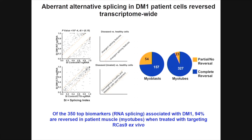We see a dramatic reversal of splicing changes in patient myotubes as well. This is the greatest and most precise number of changes we've ever seen - risk to show restoration of the aberrant effects downstream of expanded repeats. Others have used oligos, siRNAs, small molecules, but this is a dramatic shift back to normality.